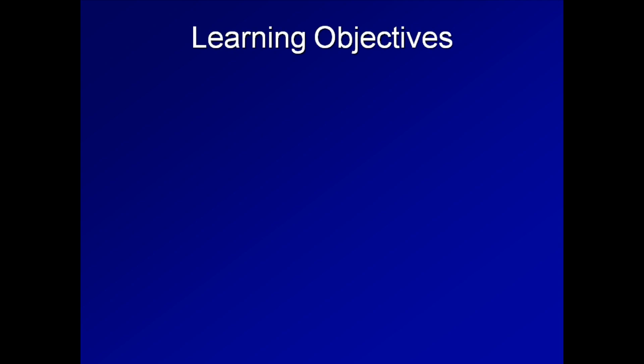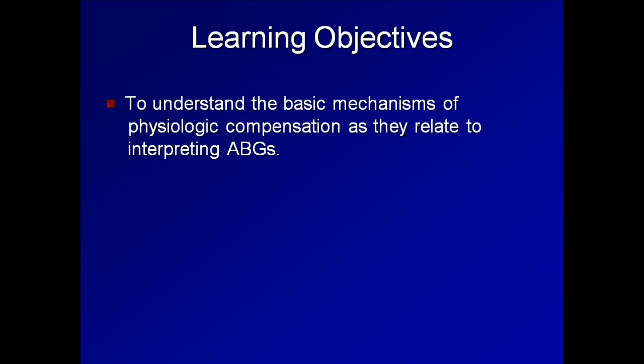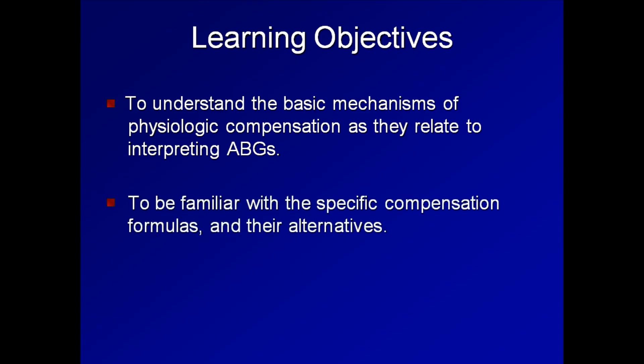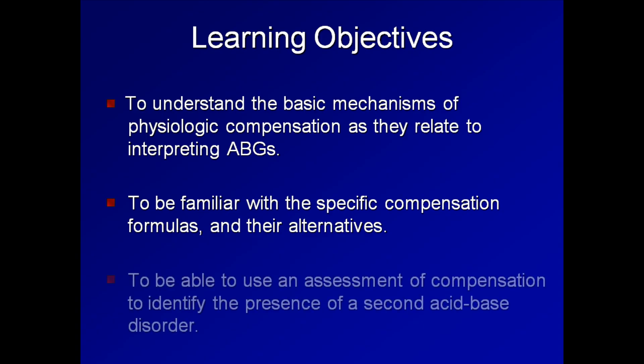The learning objectives are as follows. First, to understand the basic mechanisms of physiologic compensation as they relate to interpreting ABGs. Second, to be familiar with the specific compensation formulas and their alternatives. Finally, to be able to use an assessment of compensation to identify the presence of a second acid-base disorder.